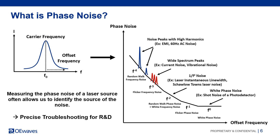Some examples are shown on the right plot. Quantum noise, for example, will have a 20 dB slope in phase noise, or a flat response in frequency noise. Driver noise will typically have flicker of frequency noise with a 30 dB slope in phase noise. AC power with 50 or 60 Hz cycles will show up as sharp spurious at these frequencies and their harmonics.